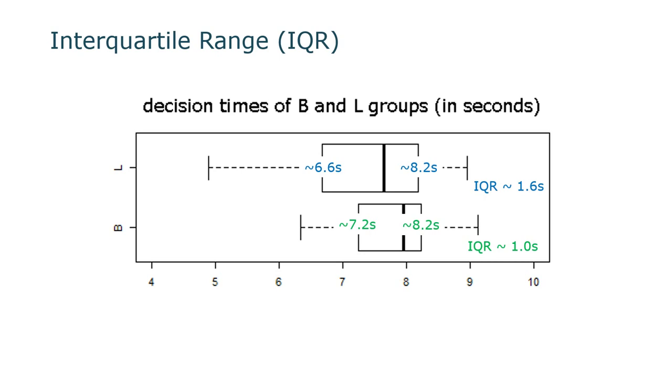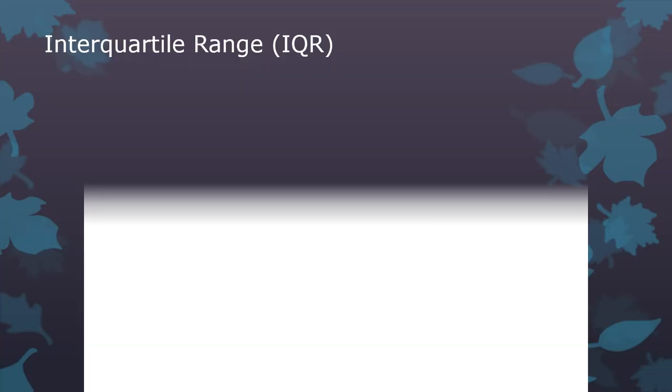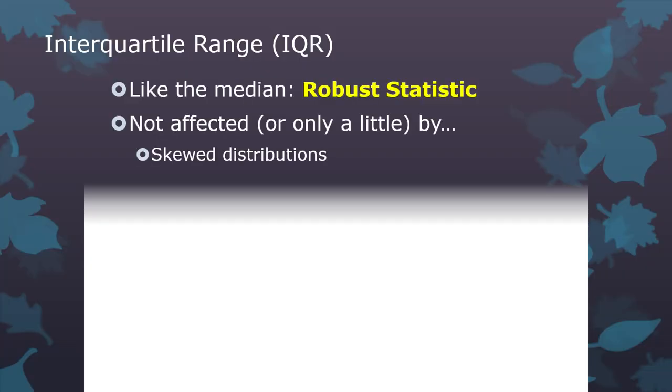So the IQR, as you've noticed, is expressed in the units that are being measured, which is an important thing to note. So like the median, the IQR is a robust statistic.